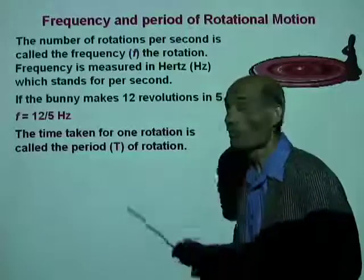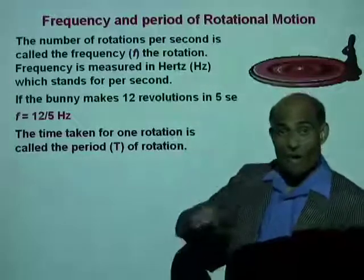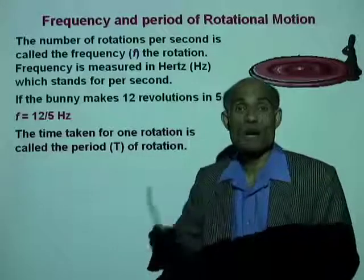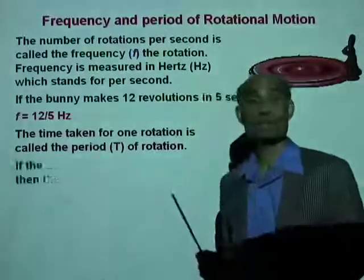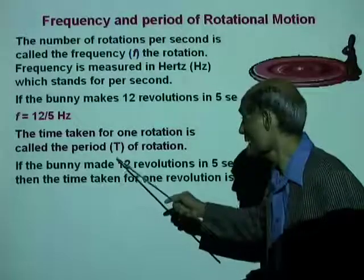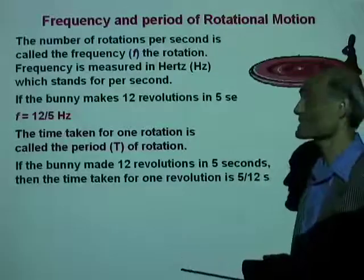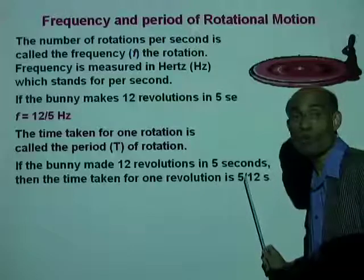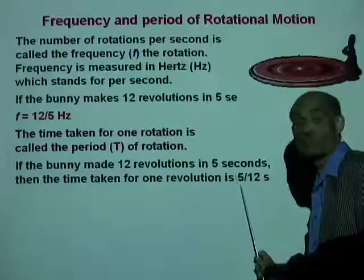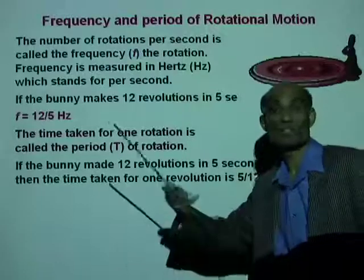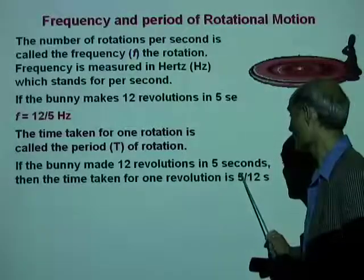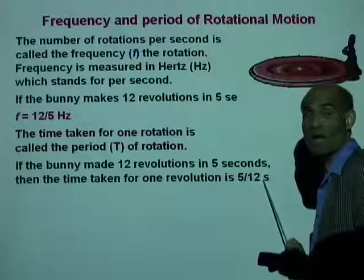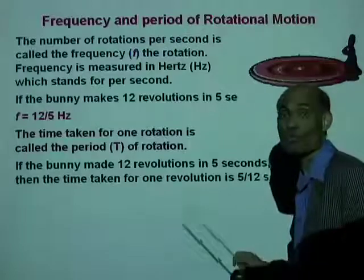The time taken for the bunny to go around once, or the time taken by any rotating object to go around once, is called the period. If the bunny makes 12 revolutions in 5 seconds, the time taken for 1 revolution is 5 seconds divided by 12. That is the period.